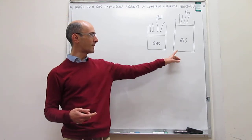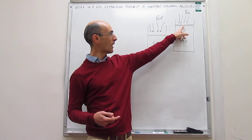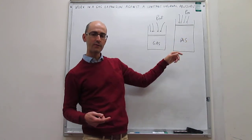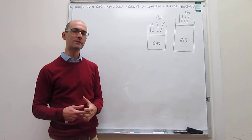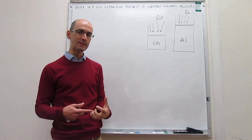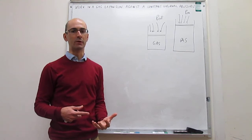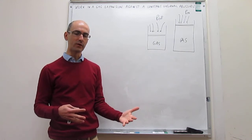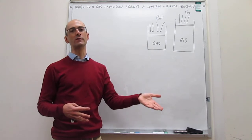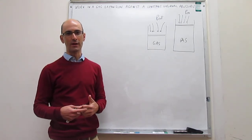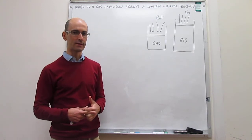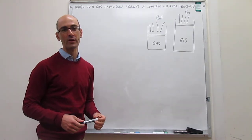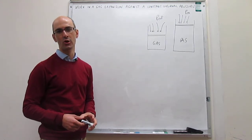On the contrary, if the process goes in reverse — the surroundings transfer energy as work to the system — the system gains energy as a result of that transfer, so that work would be positive. In summary: when the system does work on the surroundings, that is negative work because energy is leaving the system; when the surroundings do work on the system, that is positive work because the system is gaining energy. With that convention, we can now calculate the work done in a gas expansion against a constant external pressure.